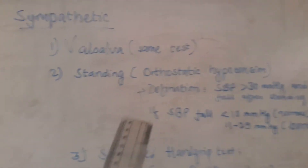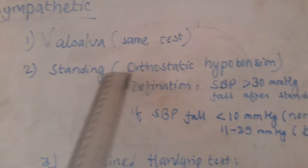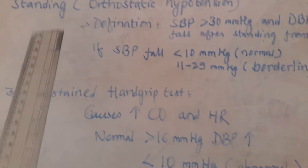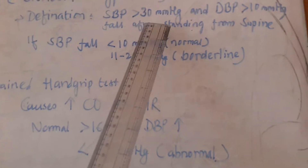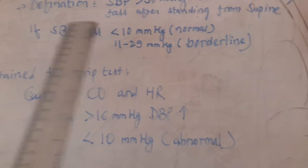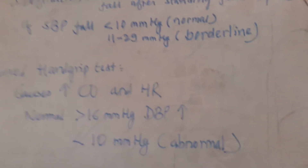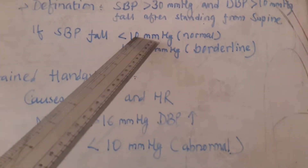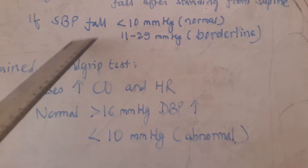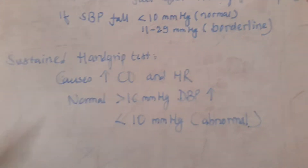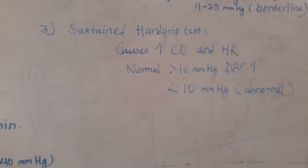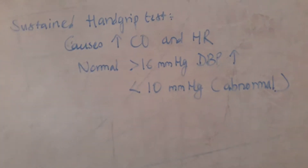For the sympathetic nervous system, the next test is standing, where orthostatic hypotension is assessed. It is defined as a systolic blood pressure fall of more than 30 mmHg and diastolic blood pressure fall of more than 10 mmHg after standing from a supine position. Normally this mechanism is compensated, with less than 10 mmHg fall in systolic blood pressure. Borderline is 11 to 29 mmHg, and more than 30 mmHg is significant.